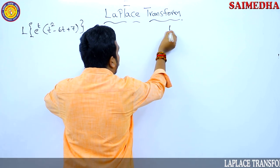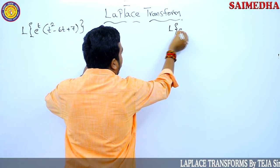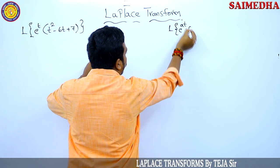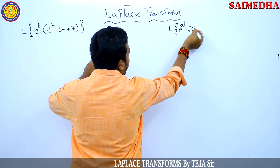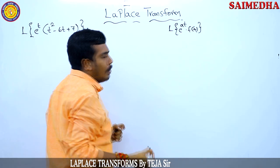By the first shifting theorem, the Laplace transform of e^(at) into f(t) equals the Laplace transform of f(t) where s is replaced with s minus a.